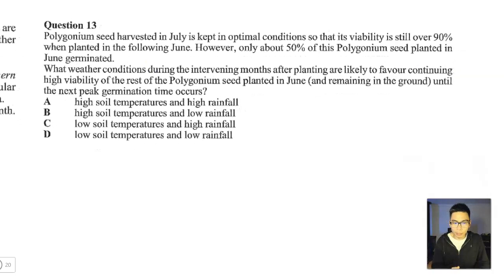Now that we are looking at the question stem, I can tell that the question begins here because it starts with the word what. That's a very common clue. The stuff above is most likely context and you have to be careful with the context because it can be sometimes misleading or at the very least, just not very helpful. We're going to have a quick read. But just keep in mind, it's context. Polygonum seed harvested in July is kept in optimal conditions so that its viability is still over 90% when planted in the following June. However, only about 50% of this Polygonum seed planted in June germinated.